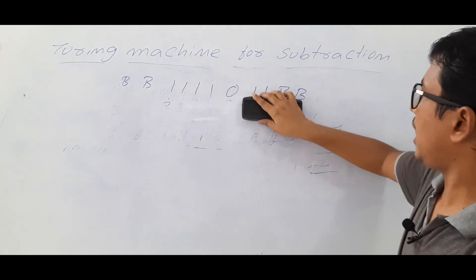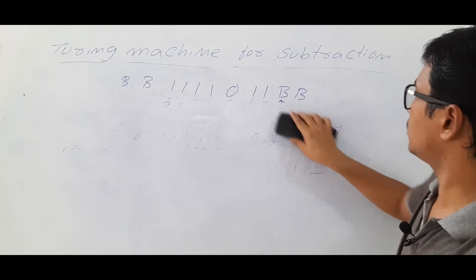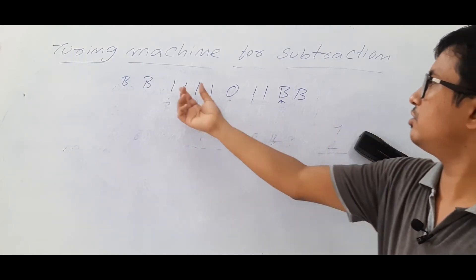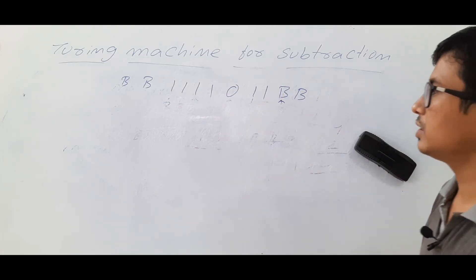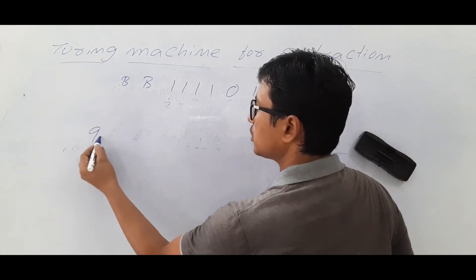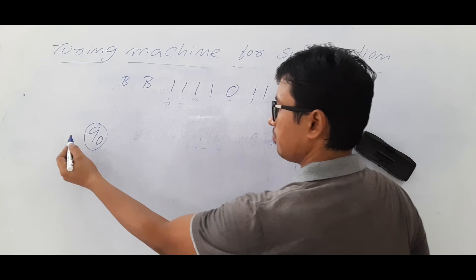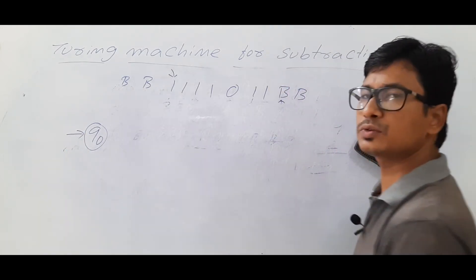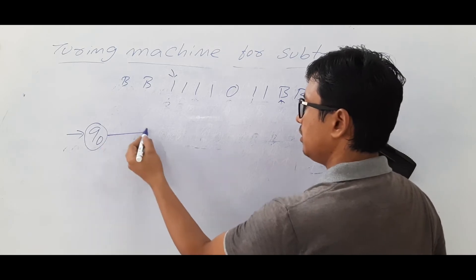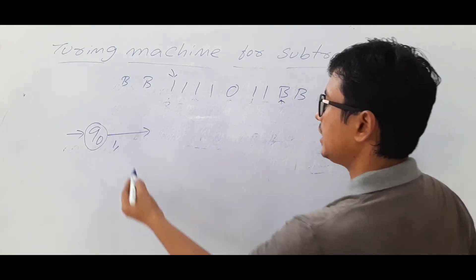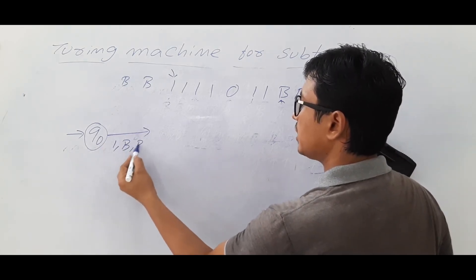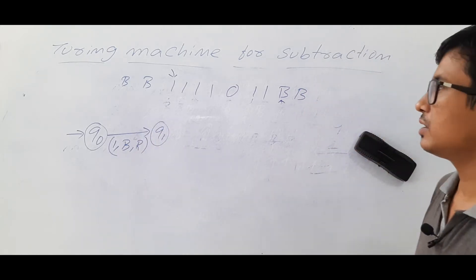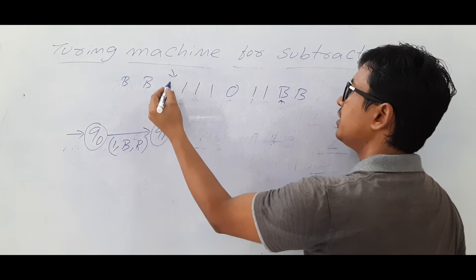So the simple process is: take the first 1 from m and make it a blank, keep going, find the last 1 in n and make it a blank. We will now construct the Turing machine formally. I am taking four 1s and two 1s — m value is 4, n value is 2. I am in the initial state q0, and the tape head is pointing to the first 1.